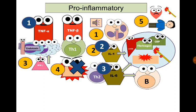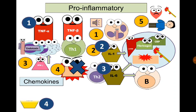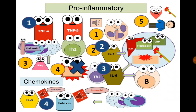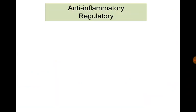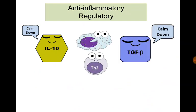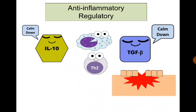Interleukin-6 also acts as a growth factor for B lymphocytes. Interleukin-8 acts as a chemotactic factor for neutrophils, and eotaxin calls for eosinophils; both are produced by monocytes and macrophages. Anti-inflammatory cytokines include interleukin-10 and transforming growth factor beta, produced by macrophages and T helper 2 cells. Transforming growth factor beta also acts as a growth factor that promotes healing of cells.